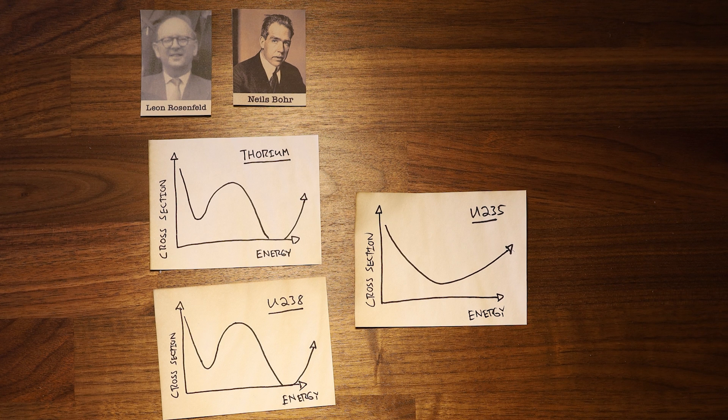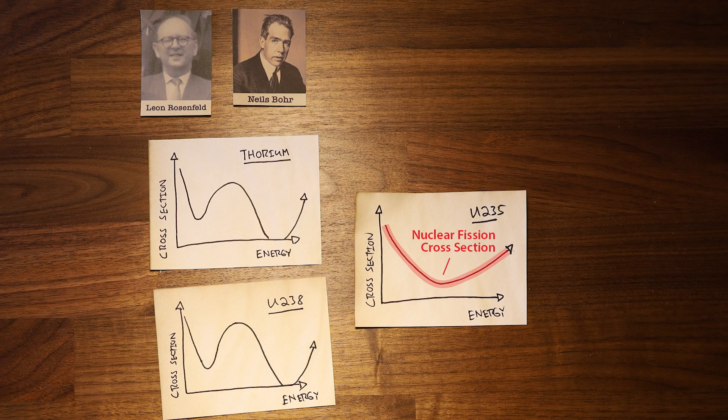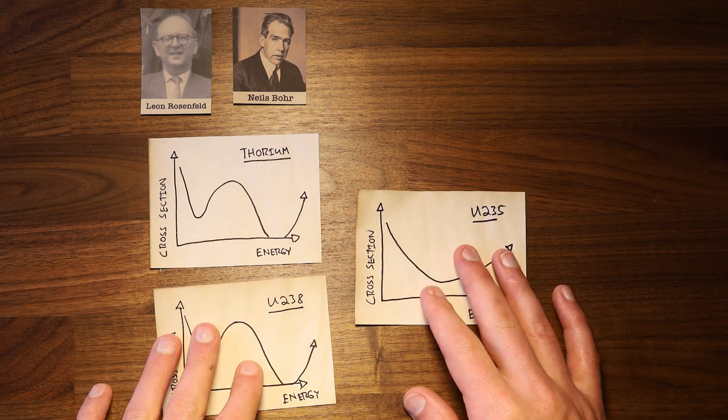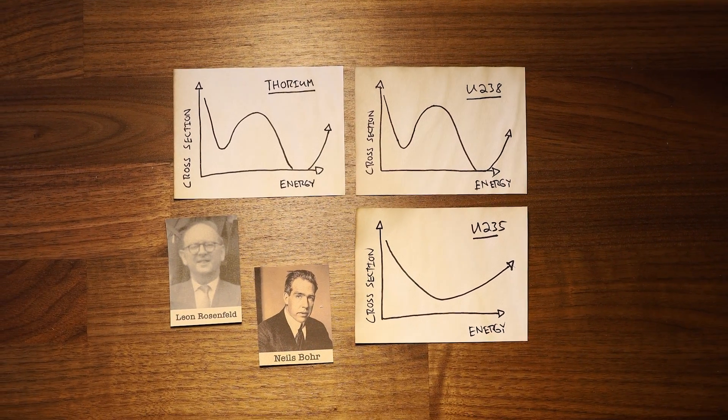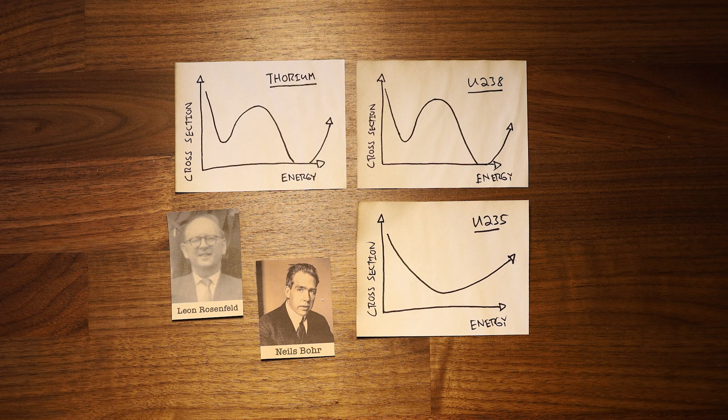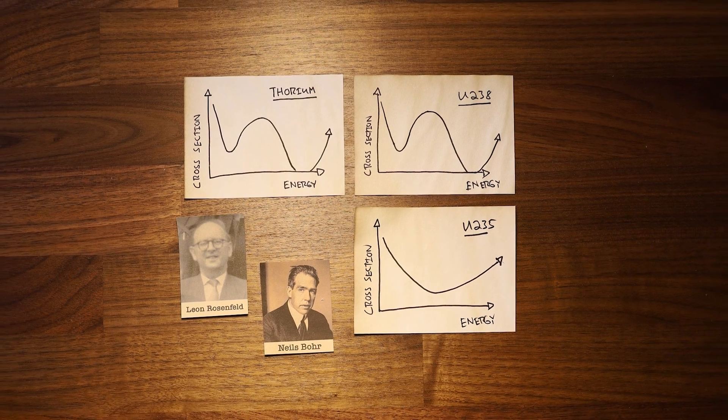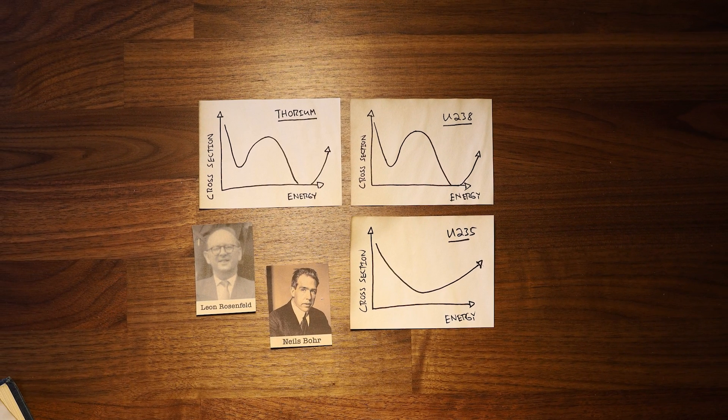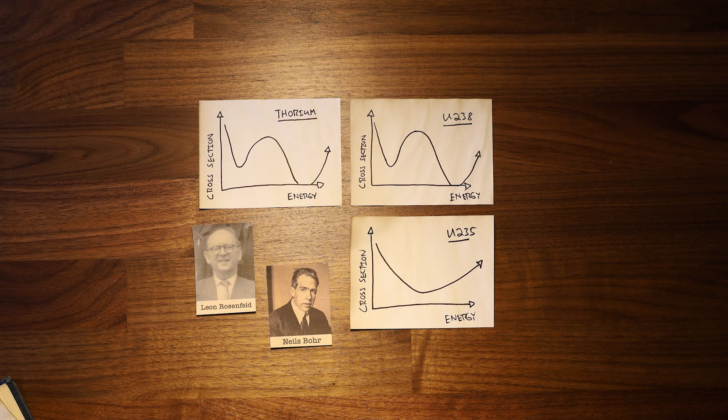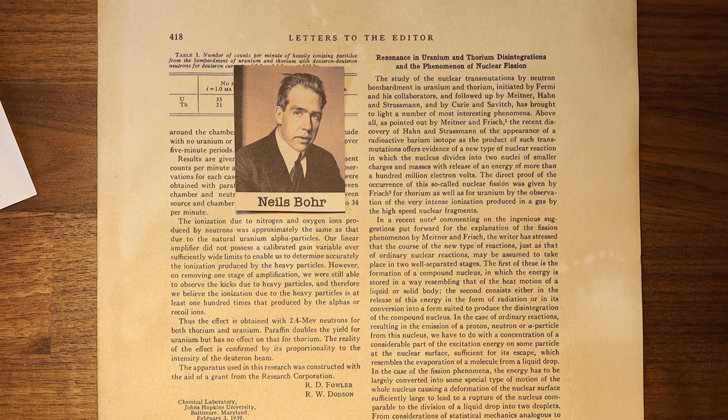The reason natural uranium split under slow neutron bombardment while thorium did not was because uranium was not just one thing. Its isotopes behaved differently due to the subtle difference between an even and odd number of neutrons. Bohr wrote up his results and submitted to the Physical Review. What he didn't realize at the time was that he had found the perfect material to build the atomic bomb.